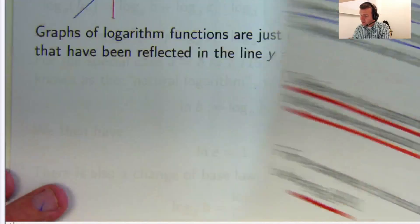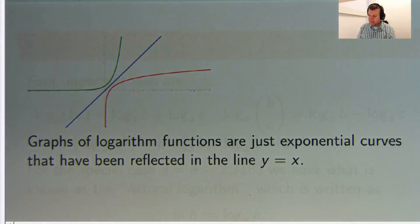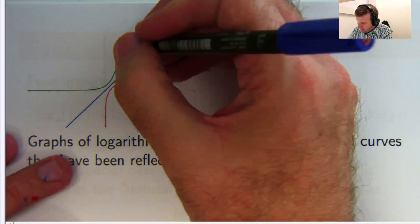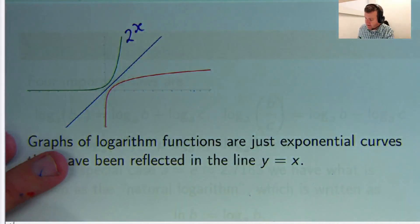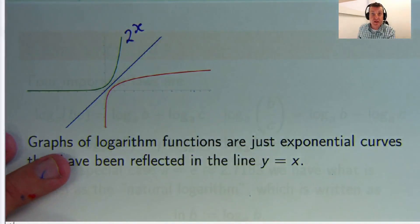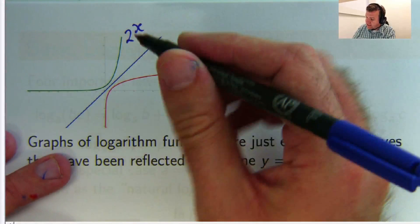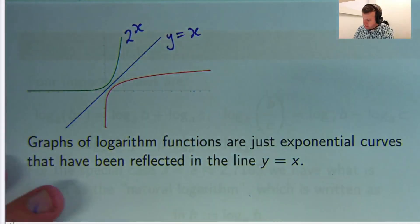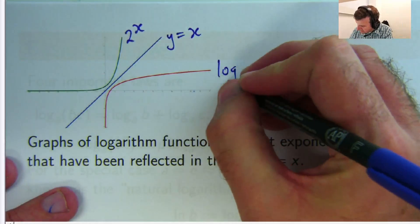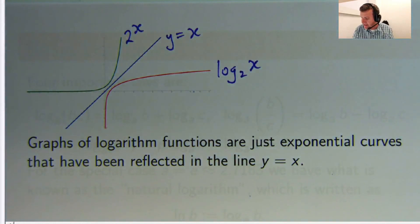Now, what do logarithms look like graphically? Well, I am glad you asked. Here is a curve. So, this might be, the green curve might be 2 to the x. The corresponding logarithm curve is basically just the same curve reflected in the line y equals x.